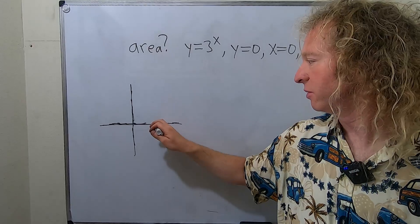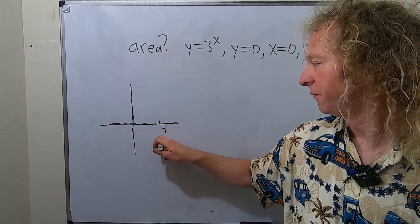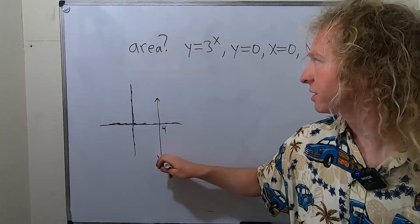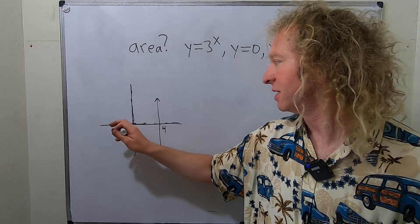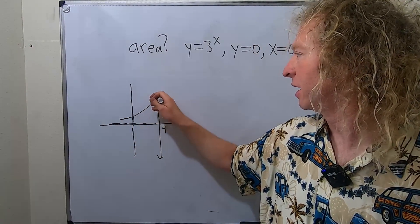x equals 4 is a vertical line, so it's over here. Let's just say it's here. And then what's left is y equals 3 to the x. That's an exponential function that looks something like this.